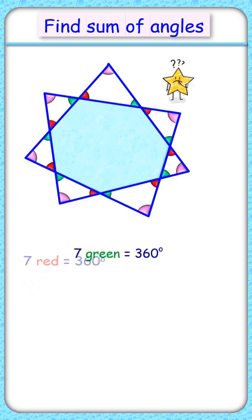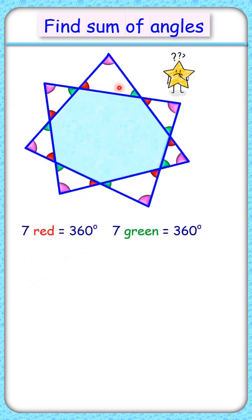Let's concentrate on these seven triangles. From there, the sum of seven red angles, seven green, and seven pink angles will be seven times 180 degrees.